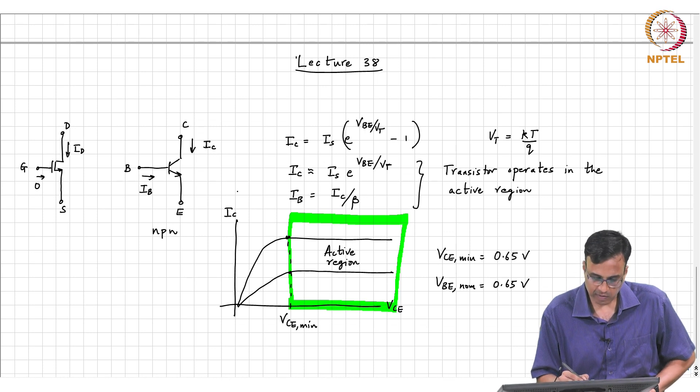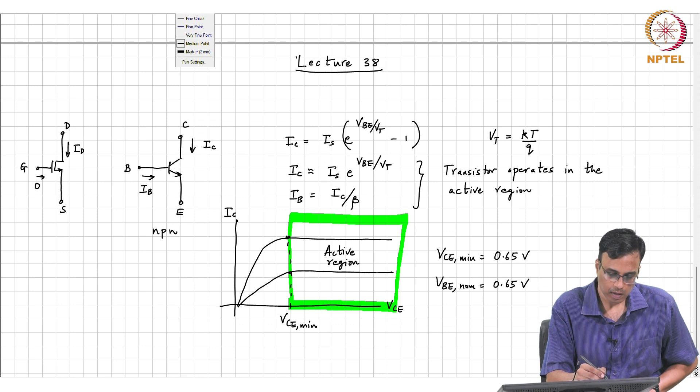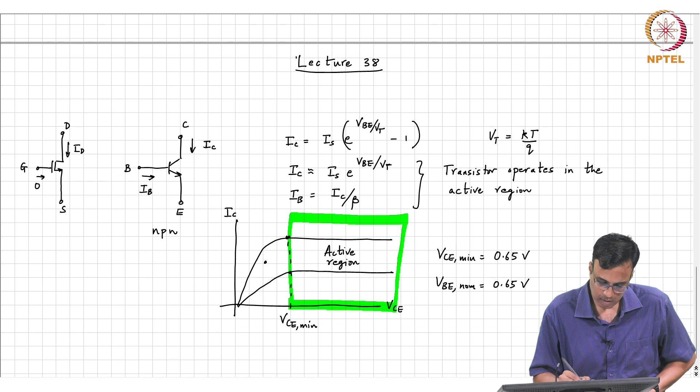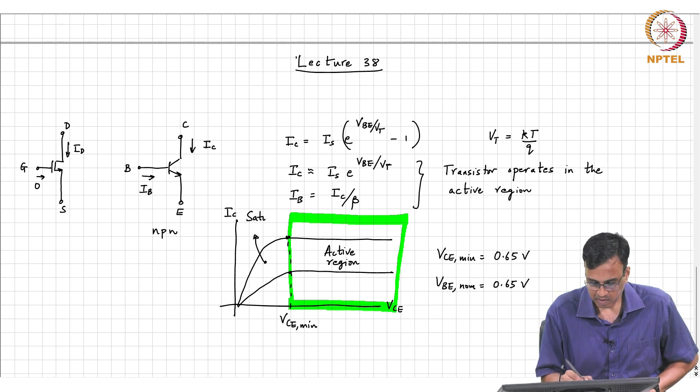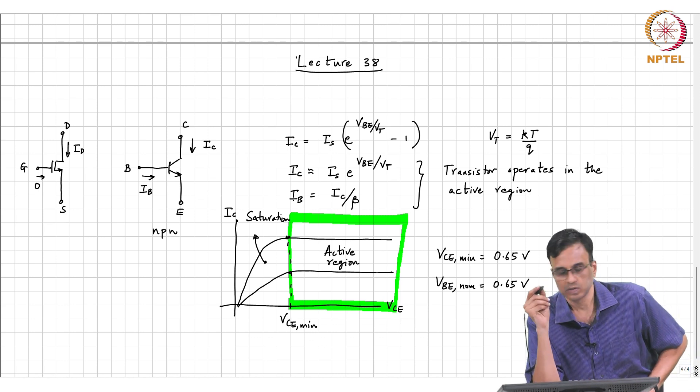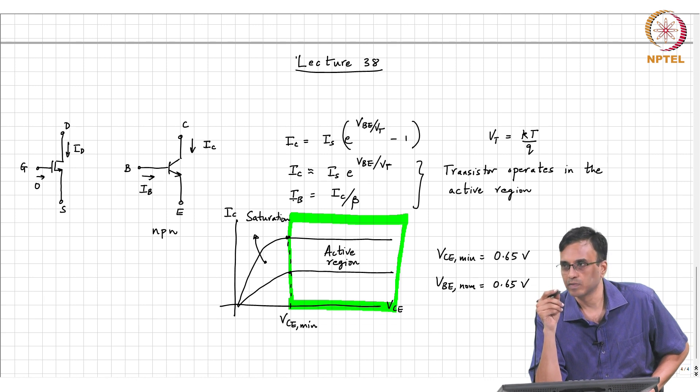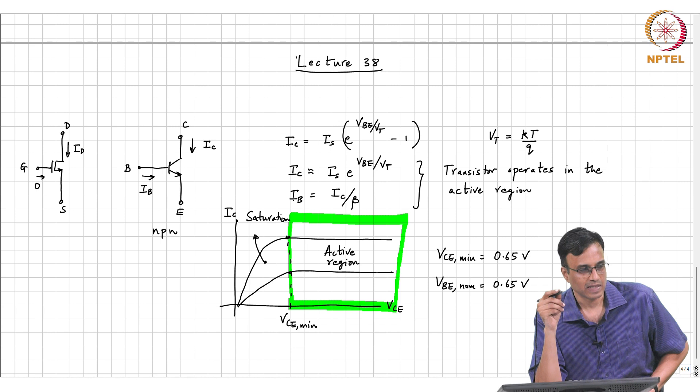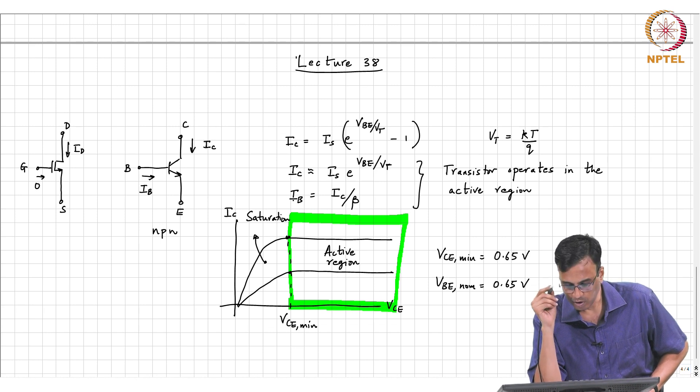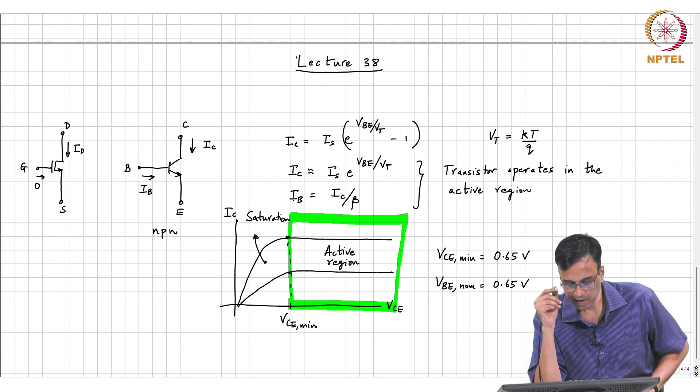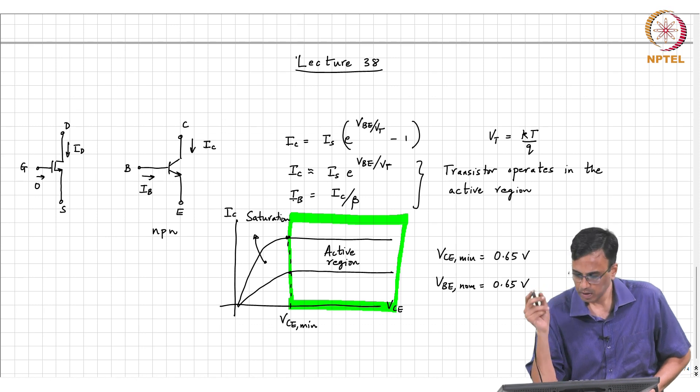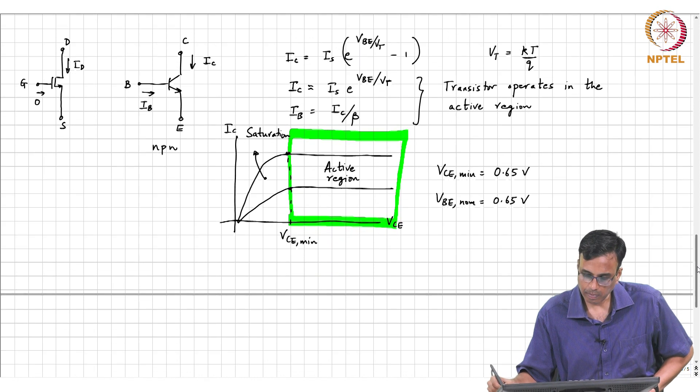Rather unfortunately, this region is called saturation, because it's got to do with what happens in the device. But this can be a bit confusing. In a MOS transistor you want to operate in the saturation region, which corresponds to the active region of operation for the MOSFET, but that is not where you want to operate when working with the bipolar transistor.